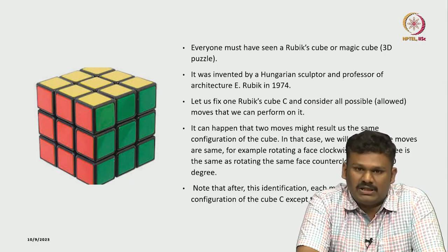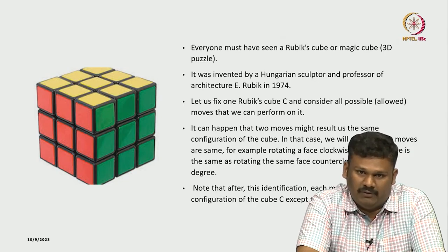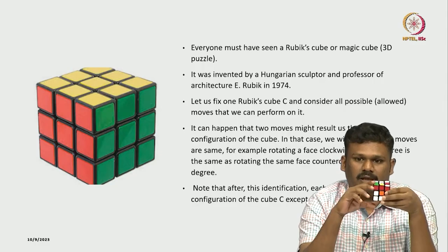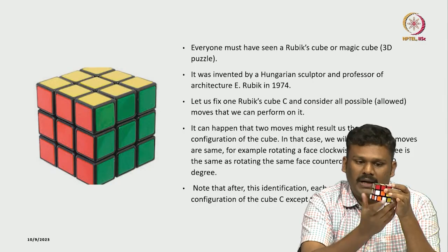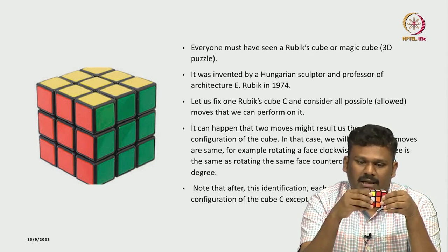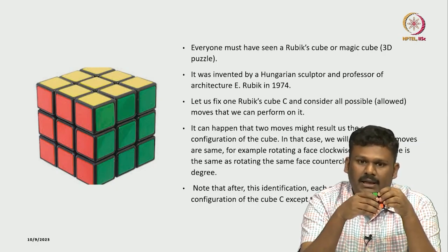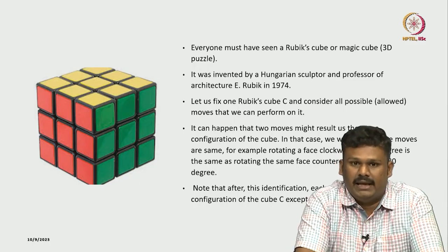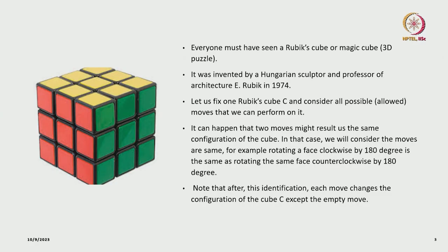Let us fix one Rubik's cube, call it capital C, and consider all possible allowed moves that we can perform on it. We can rotate horizontally 90 degrees, 180 degrees, and so on. Similarly, we can also rotate vertically 90 degrees, 180 degrees, and so on. But it can happen that two moves might result in the same configuration of the cube, and in that case we will consider those moves to be the same.